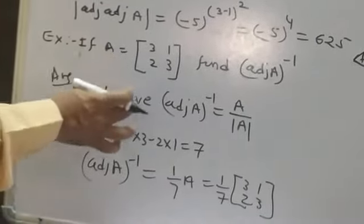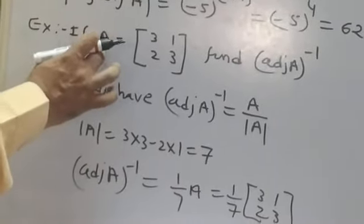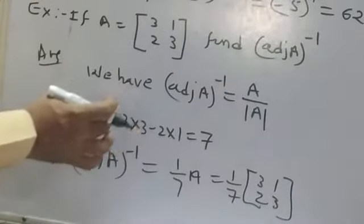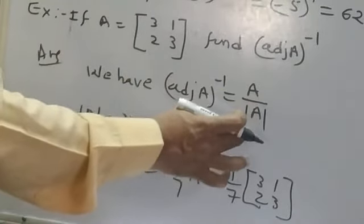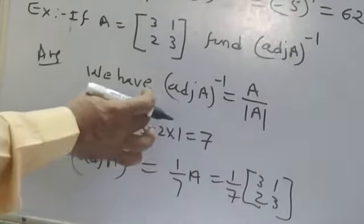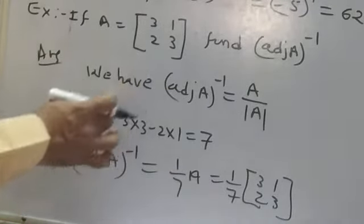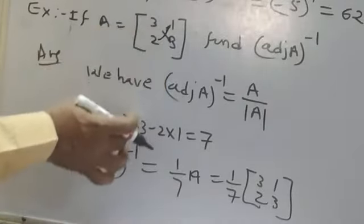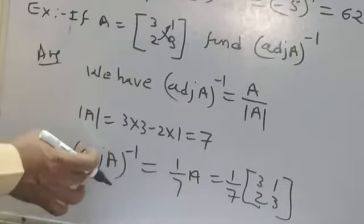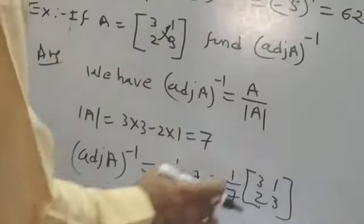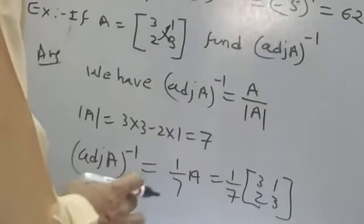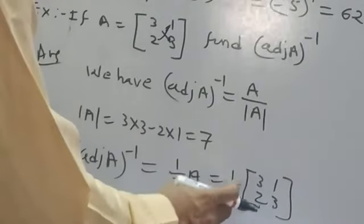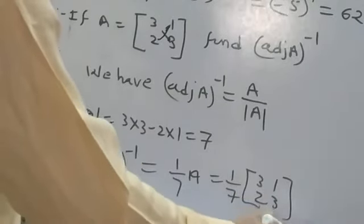Example 5 is based on property 7. If matrix A equals the 2x2 matrix with entries 3, 2, 1, 3, find A inverse. Using property 7, Adjoint A inverse equals A upon determinant A. The determinant is 3 into 3 minus 1 into 2, which equals 7. Therefore A inverse equals 1 upon 7 into Adjoint A.